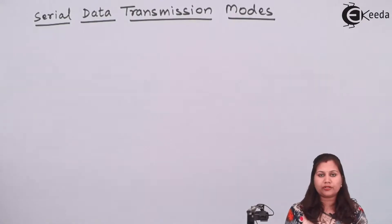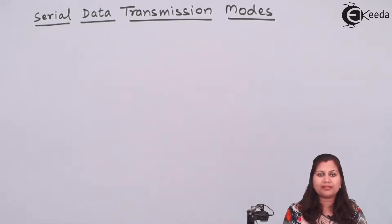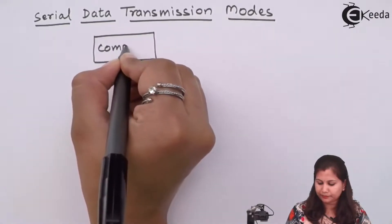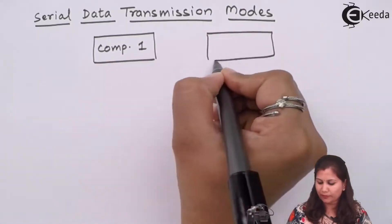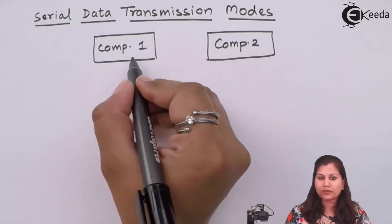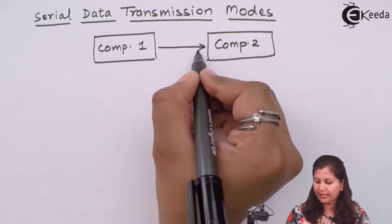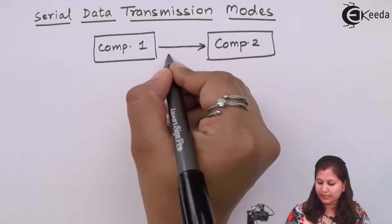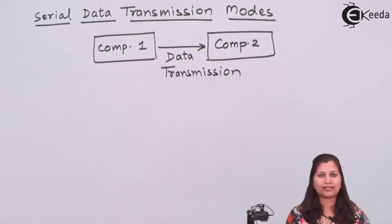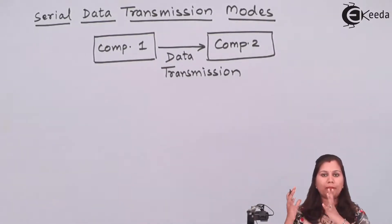When we talk about communication between two components or two equipments or devices, communication means that data transmission — transfer of data — is taking place between the two components. If one component is sending the data and the second component is receiving the data, that is data transmission. Communication is nothing but the transmission of data from one component to another component.